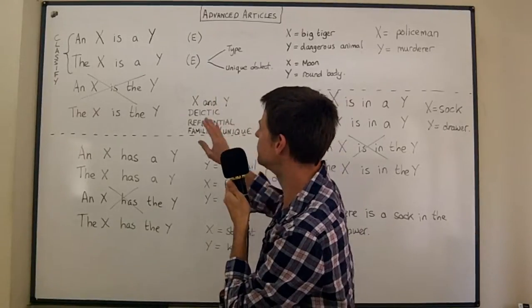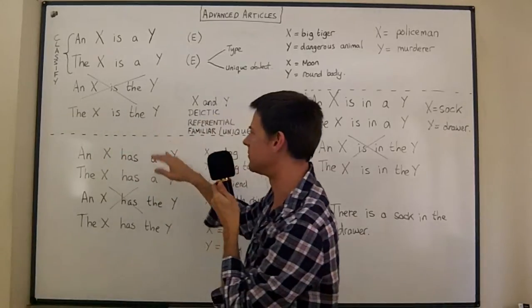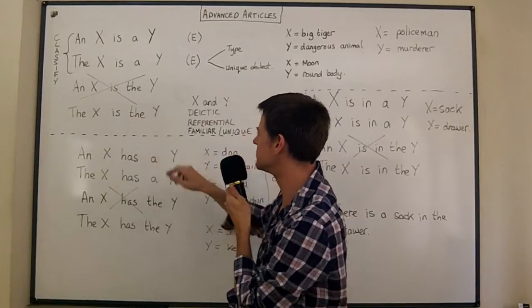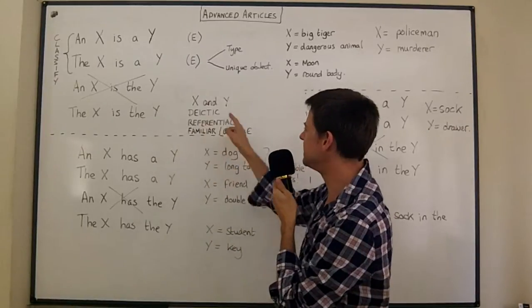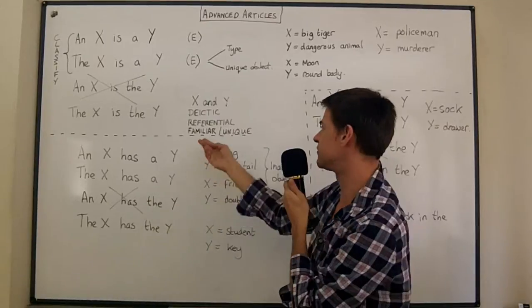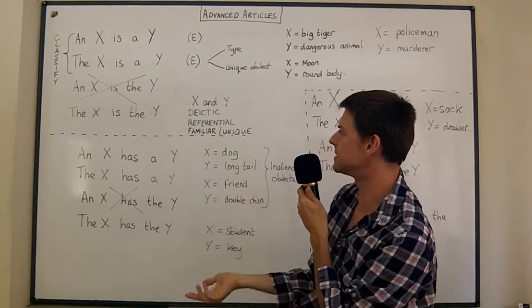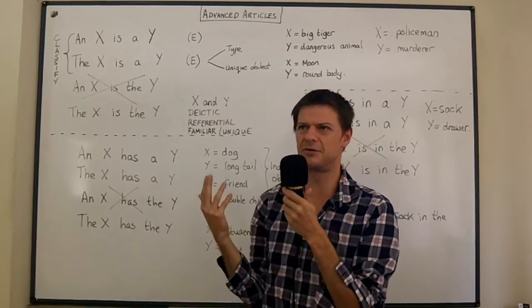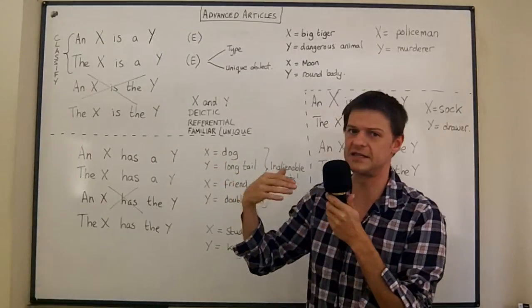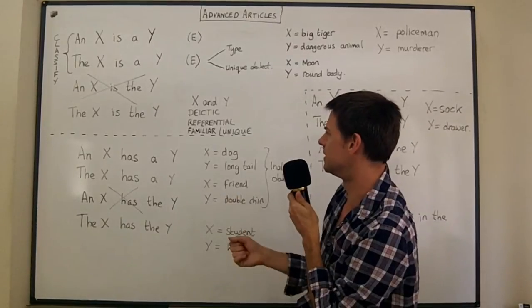One thing you will probably not hear is the moon is the round body. And this is because what do we mean by the round body? The round body must be deictic. It must refer to something with which the listener is familiar or perhaps it's unique. And the round body is just not unique. It's unlikely to be a familiar concept to the listener.